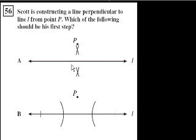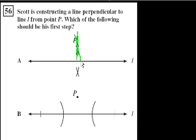So he wants to draw a line that looks something like this, going straight up through the point P. And how do you do that? Obviously, if you just use a ruler, maybe by accident you draw it at a slight angle or something like that. So he wants to have an exact line.